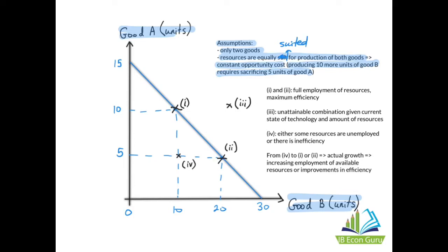Points I and II are on the PPC itself — they represent combinations of output where there is full employment of resources and maximum efficiency. Point III is an unattainable combination of output given the current state of technology and the amount of resources available. Point IV, or any point inside the PPC, represents a combination of output where some resources are unemployed or there is inefficiency. Any move from point IV to point I or II represents actual growth, accomplished through increasing employment of available resources or improvements in efficiency.